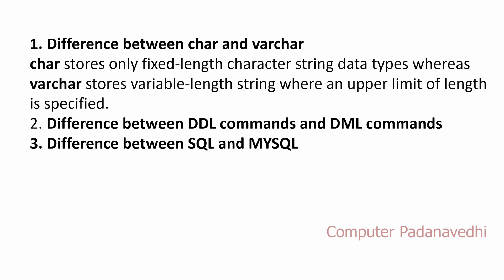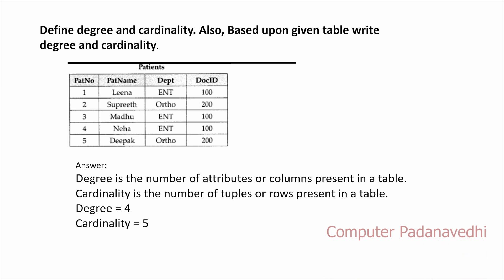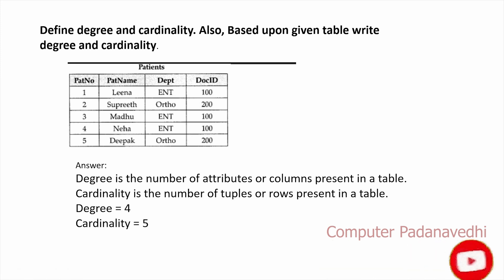Here are review notes on the difference between DDL and DML commands, and between SQL and MySQL. Define degree and cardinality: Degree is the number of attributes or columns present in the table — for example, 4 columns means degree 4. Cardinality is the number of tuples or rows present in the table.